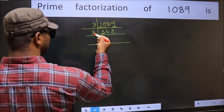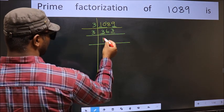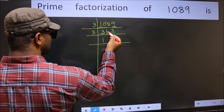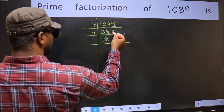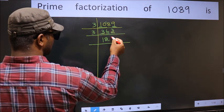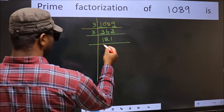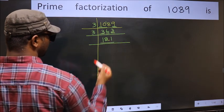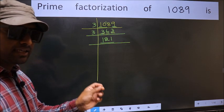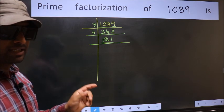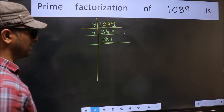First number 3. When do we get 3 in 3 table? 3 times 1 equals 3. The other number 6. When do we get 6 in 3 table? 3 times 2 equals 6. The other number 3. When do we get 3 in 3 table? 3 times 1 equals 3.